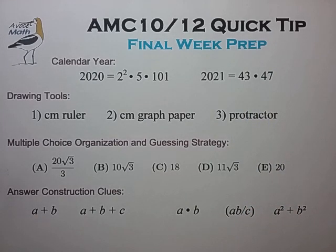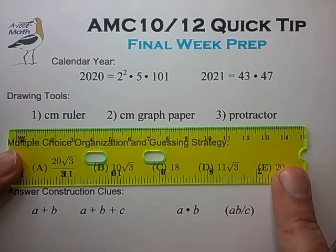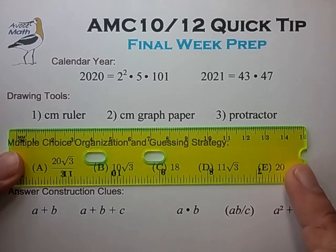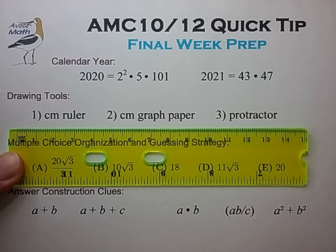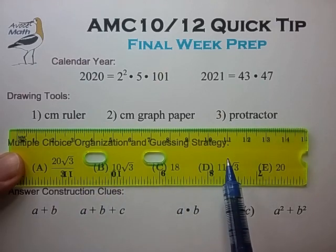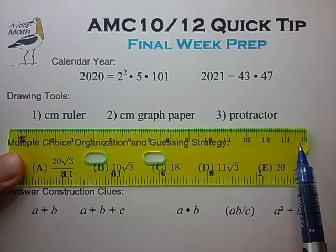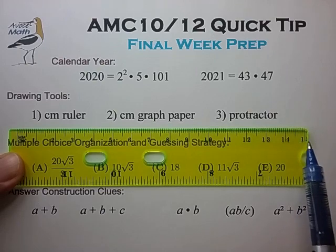Second, let's talk about the drawing tools you should bring along to the test. The most important tool is a short centimeter ruler to measure the figures provided and help make accurate scale drawings as needed. I find that a full-size ruler is too clumsy for the AMC, so go with something around 15 to perhaps 20 centimeters in length.